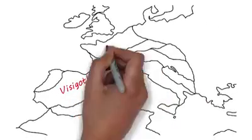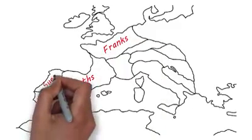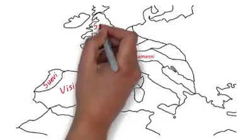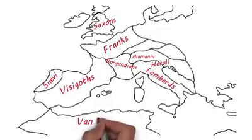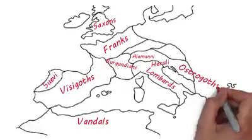History identifies these ten barbaric tribes as the Visigoths, Franks, Suvii, Alameni, Anglo-Saxons, Lombards, Burgundians, Hurali, Vandals, and the Ostrogoths.